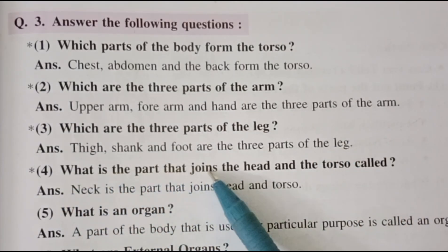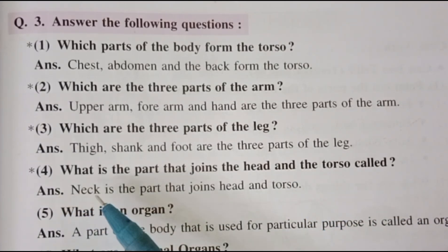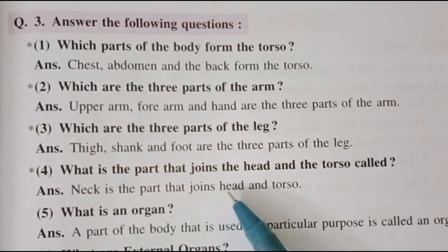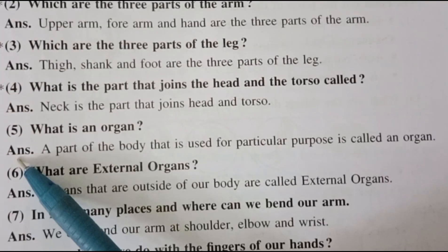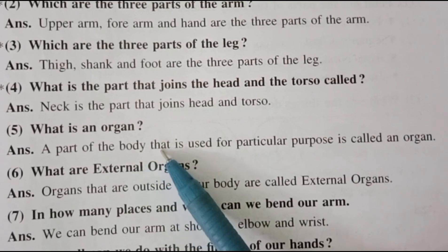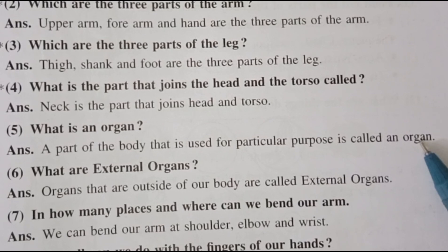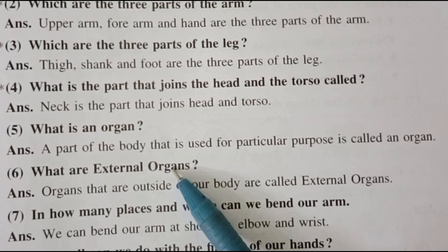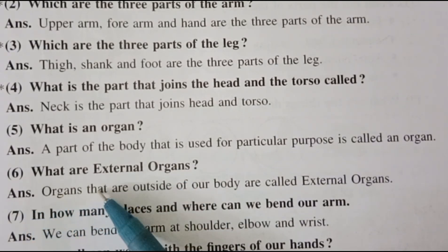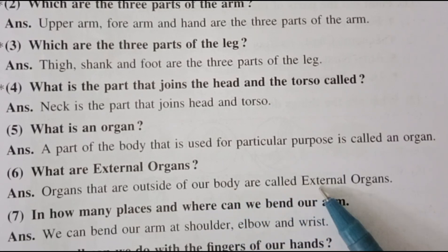4. What is the part that joins the head and the torso called? Answer: neck is the part that joins head and torso. 5. What is an organ? Answer: a part of the body that is used for a particular purpose is called an organ. 6. What are external organs? Answer: organs that are outside of our body are called external organs.